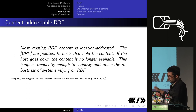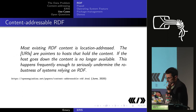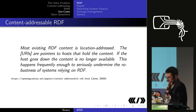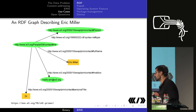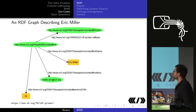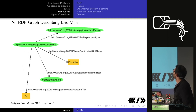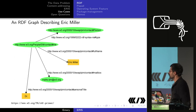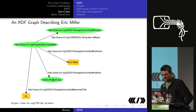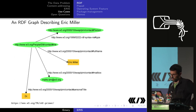What are some use cases? Puka Mustard, who wrote the spec, is interested in RDF. He says most existing RDF content is location-addressed — URIs point to hosts that hold the content, and if the host goes down the content is unavailable, seriously undermining the robustness of RDF. In this W3 example about Dr. Eric Miller, all the URLs inside aren't guaranteed to persist at w3.org.